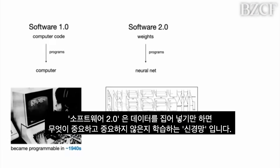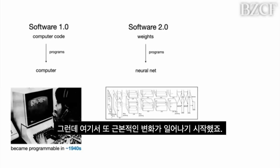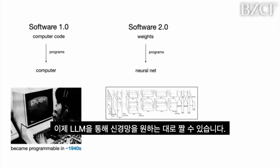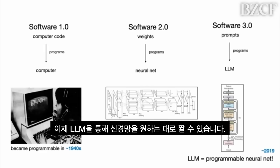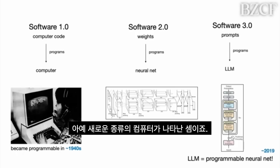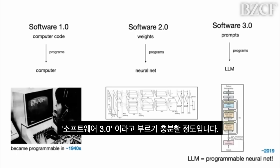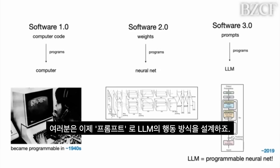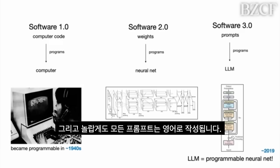What's changed now — and I think it's quite fundamental — is that neural networks became programmable with large language models. I see this as a new kind of computer, so it's worth giving it a new designation: Software 3.0. Basically, your prompts are now programs that program the LLM.